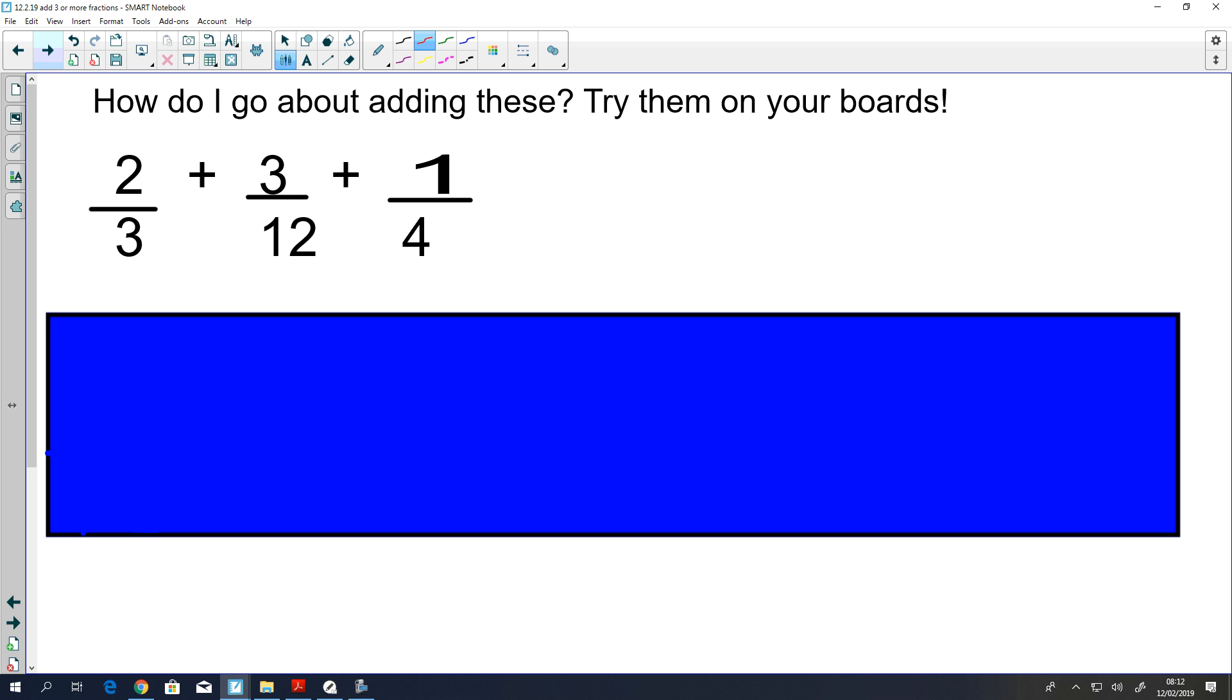How do I go about adding these? If you want to pause here, you can give this a try. It's really just the same thing we've been doing, where you have to find the lowest common multiple to make the denominators the same.